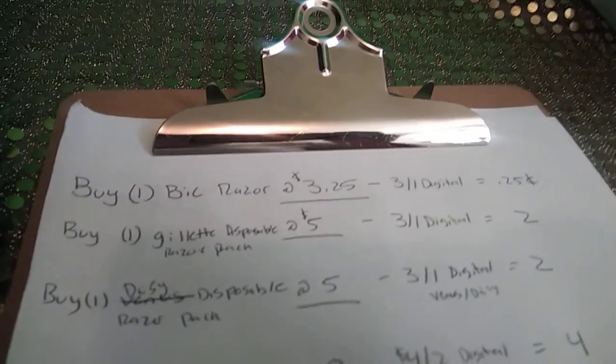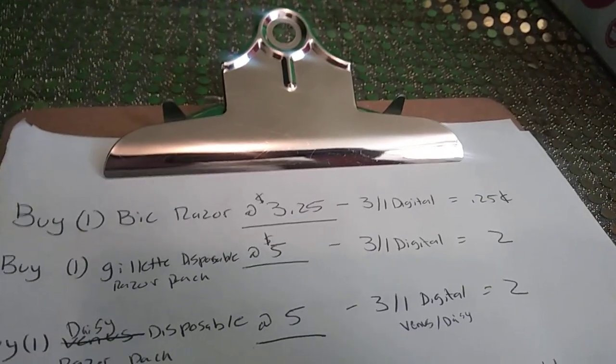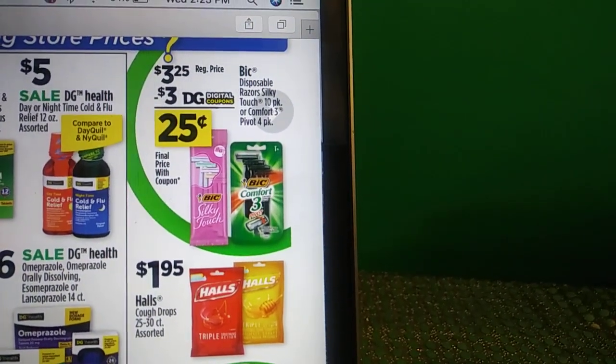For this one you would want to grab one of the Bic razors at $3.25. There's a $3 off one digital coupon so you can get those for just 25 cents. So here you are, they have a few different ones included.